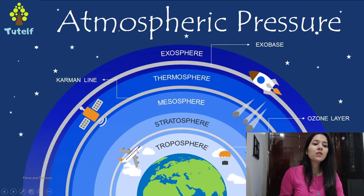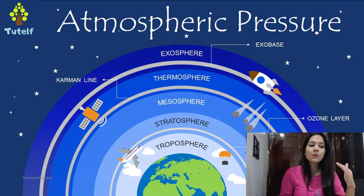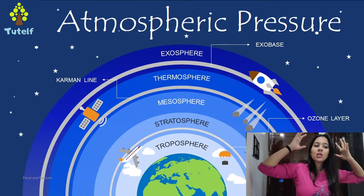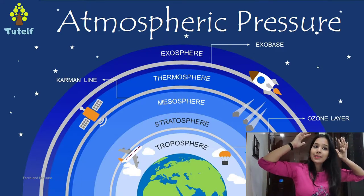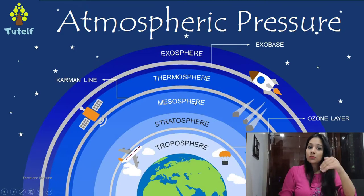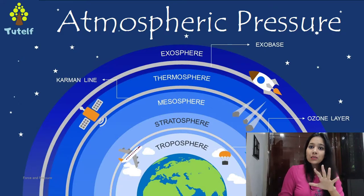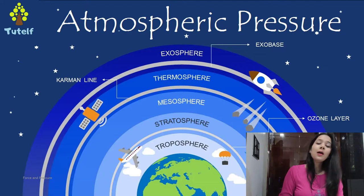As we go up in the atmosphere from the surface of the earth, the atmospheric pressure goes on decreasing. This is because as we go up, the weight of the air just above us goes on decreasing. So if you are in the mesosphere, only the mesosphere, thermosphere, and exosphere are exerting weight. The troposphere has maximum air pressure — maximum atmospheric pressure.